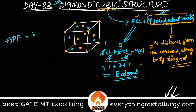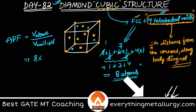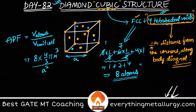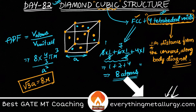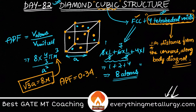What about the atomic packing fraction? The APF is the ratio of the volume of atoms divided by the volume of the unit cell. We have 8 atoms, each treated as a sphere with volume (4/3)πr³, and the unit cell volume is a³. The relation between lattice parameter a and atomic radius r is: 2√3 · a = 8r. Substituting this, the APF of diamond cubic comes out to be 0.34 — meaning 34% is filled with atoms.